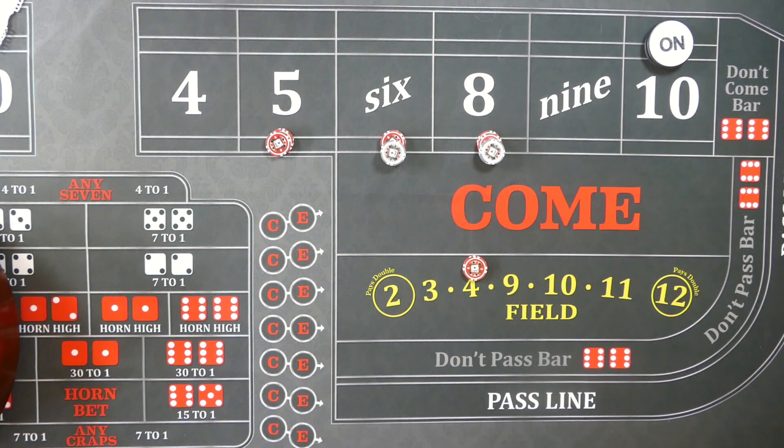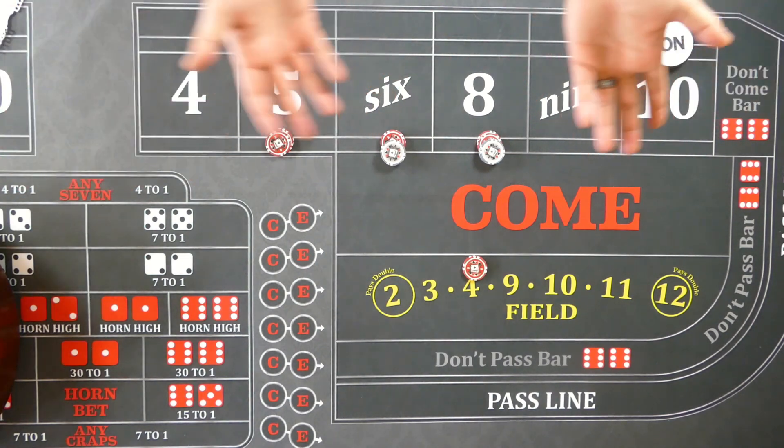But otherwise if you're just same betting repeatedly, as we've discussed in the past, you know that a seven out is coming at some point. Every roll ends with a seven. There's no getting around that.